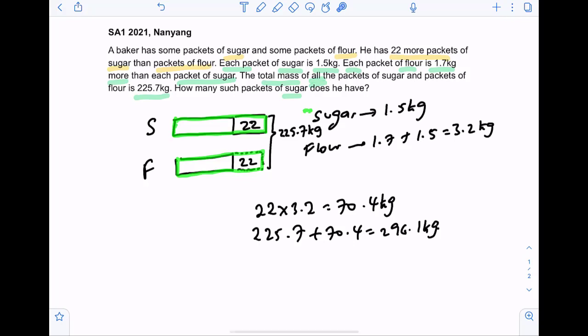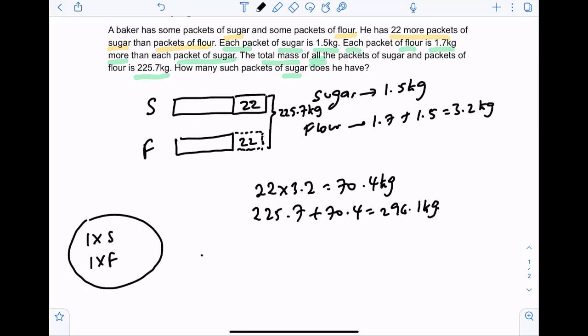They are the same. They will then have a mass of 296.1 kg. Now that we have made it the same, what we can do is group one packet of sugar together with one packet of flour, since they are the same in quantity.